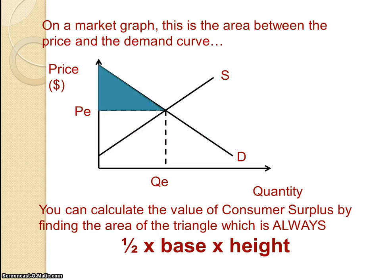So it's that area there. You can calculate that area very simply by finding the area of the triangle. The area of a triangle is half times the base. The base at this point would be between 0 and QE, times the height, which would be the difference between PE and whatever price the demand curve crosses the price axis at. You might be asked in an NCA paper to actually calculate that area.